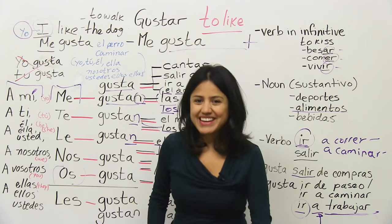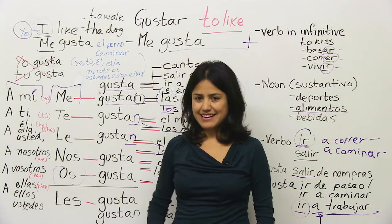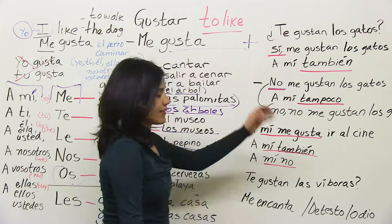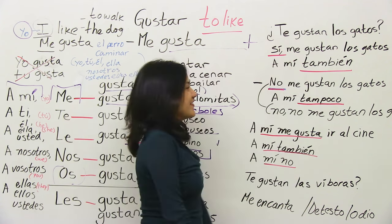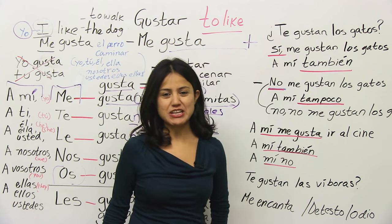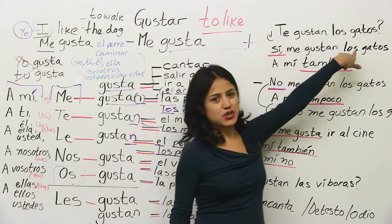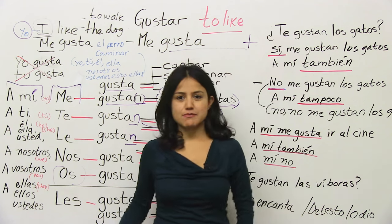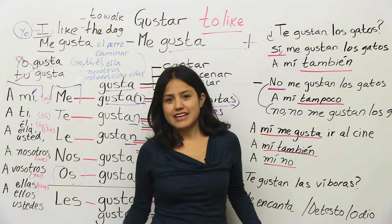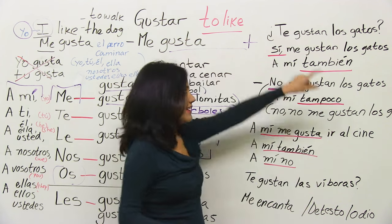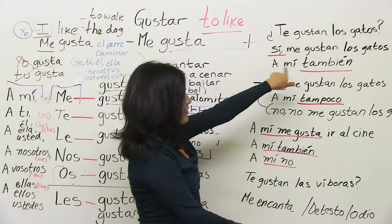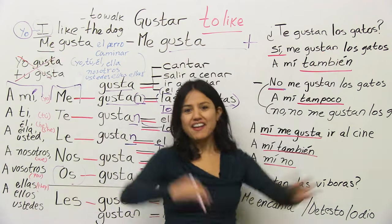Now let's go to some examples — a small conversation. '¿Te gustan los gatos?' — Do you like cats? 'Sí, me gustan los gatos.' — Yes, I like cats. And you can say 'a mí también' — so do I. '¿Te gustan los gatos?' 'Sí, me gustan los gatos.' 'A mí también.' It's all positive — we all like cats.